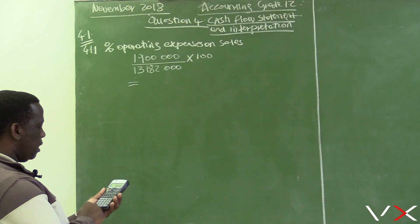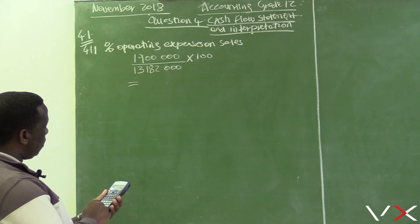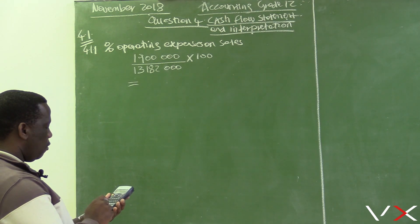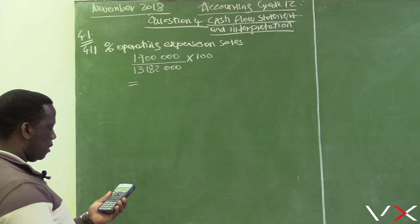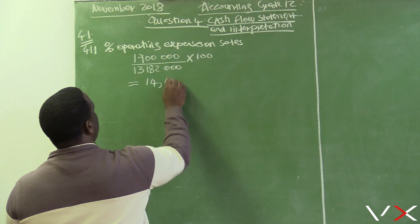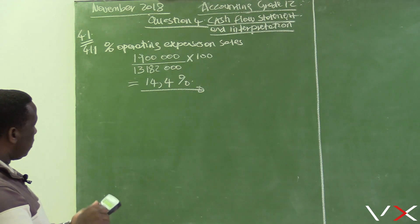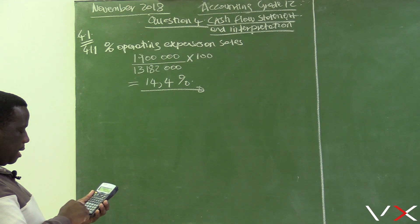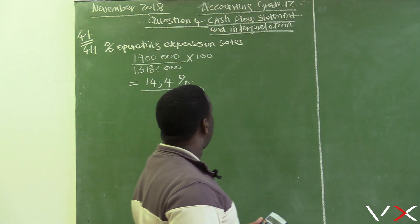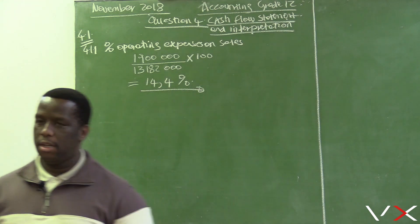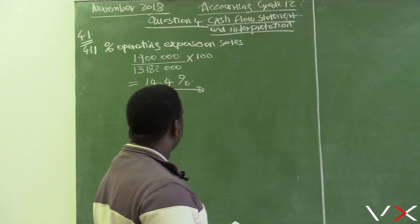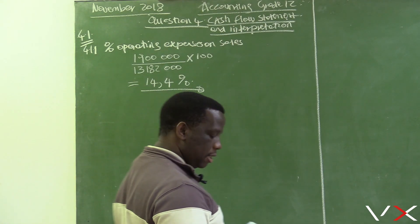The percentage operating expenses on sales is 14.4%. Remember, we want to keep this as low as possible because the main aim of the business is to make a profit. Therefore, the business needs to try by all means to reduce its expenses.